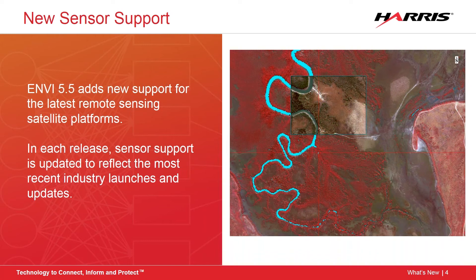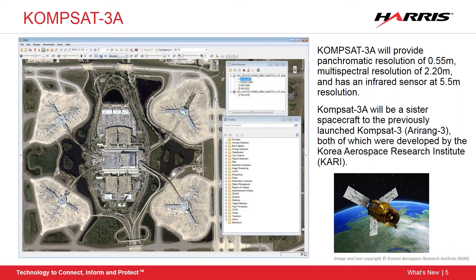The first new sensor is CompSat 3A, which provides approximately half-meter panchromatic imagery and multispectral imagery with a resolution just over two meters per pixel. The multispectral bands cover the visible and near-infrared portion of the electromagnetic spectrum. In addition, CompSat will also collect thermal imaging with a resolution of 5.5 meters. Here you can see a sample image along with a preview of what the satellite looks like in space.